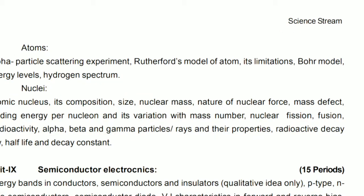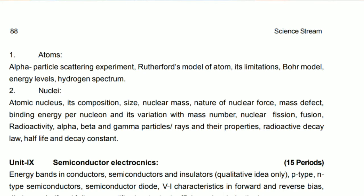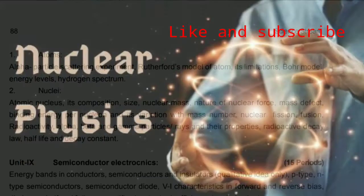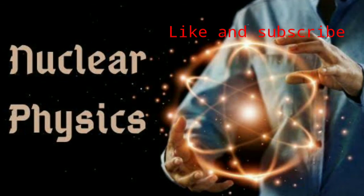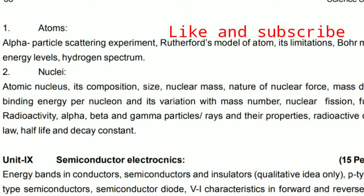Unit 8 is Atomic and Nuclear Physics. In atomic physics, we discuss the Rutherford model, Bohr's model, and hydrogen spectrum. In nuclear physics, we discuss atomic nucleus, its composition, size, nuclear mass, binding energy, packing fraction, nuclear fission and fusion, radioactivity, alpha, beta, and gamma rays, radioactive decay law, half-life, and decay constant. Units 7 and 8 together carry 10 marks in the final examination.